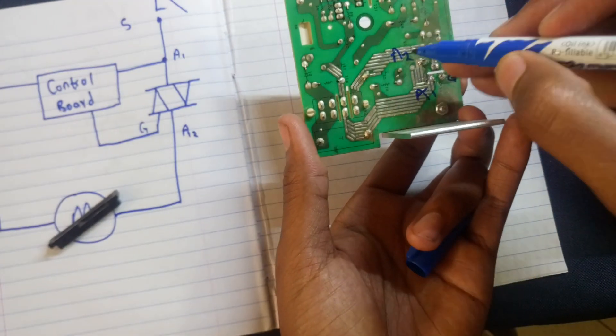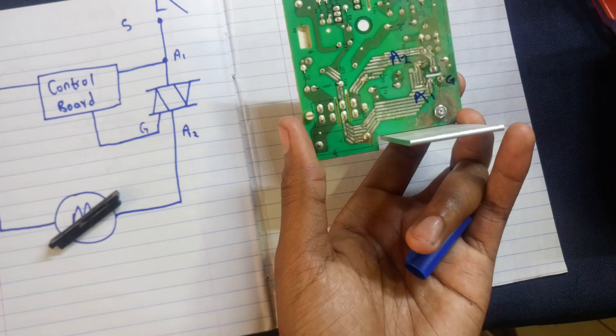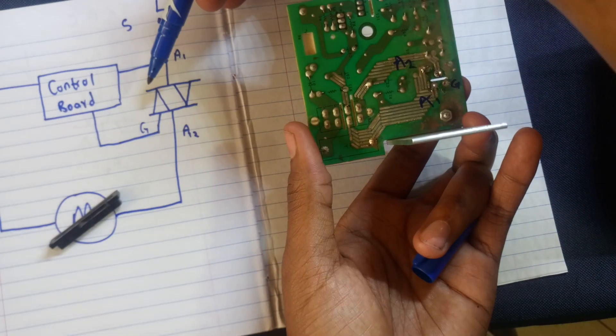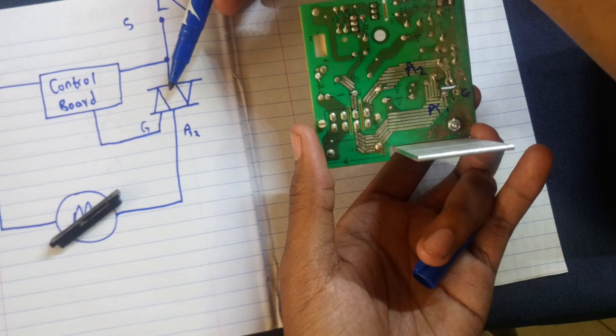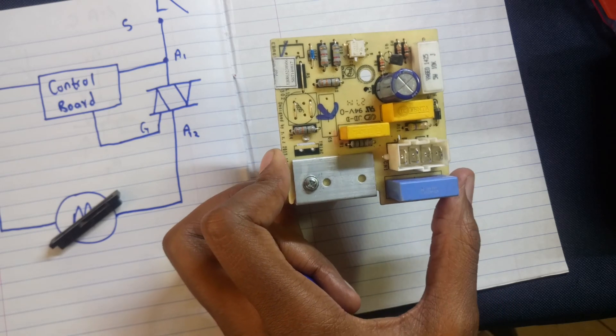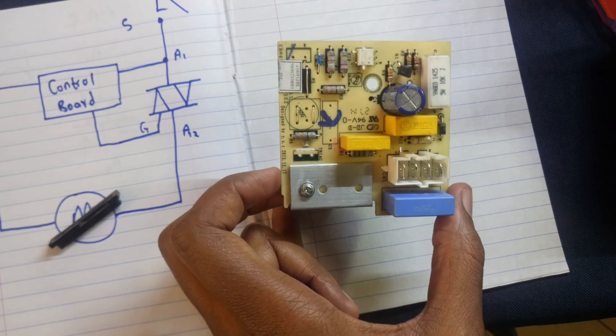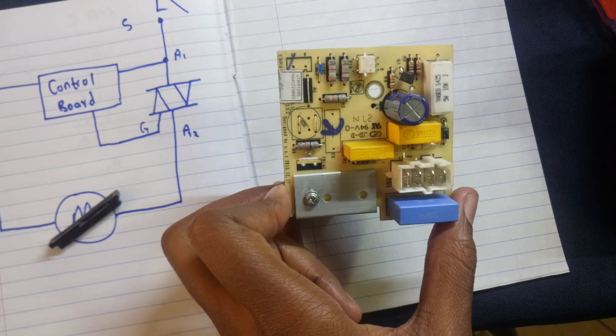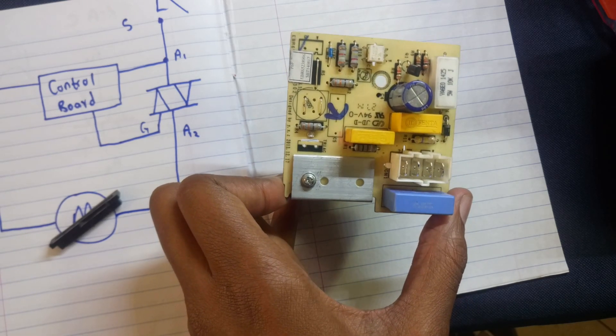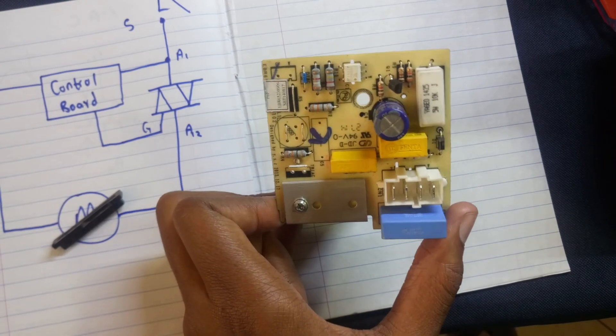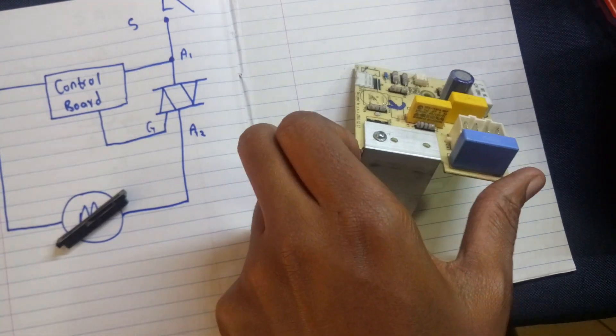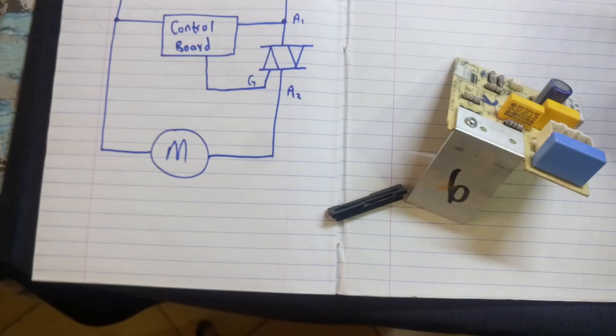In theory, I can make this vacuum cleaner work by just shorting these two terminals, because our triac actually works as a switch. In this case, it works as a control, but this vacuum cleaner does not have any speed control. This is just for more protection from the motor, but we know vacuum cleaners usually use universal motors and they can work via AC directly.